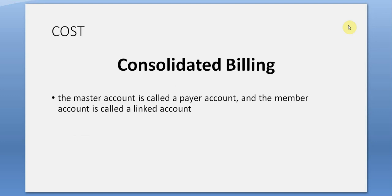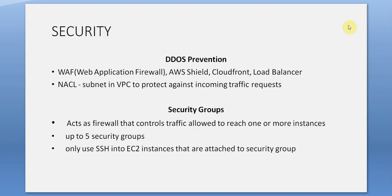Security — DDoS prevention: WAF (Web Application Firewall), AWS Shield, CloudFront, load balancer, ACL, subnet, and VPC to protect against incoming traffic requests. Security groups act as a firewall that controls traffic allowed to reach one or more instances — up to five security groups. Only use SSH into EC2 instances attached to the security group.